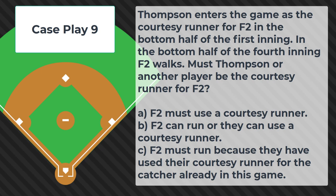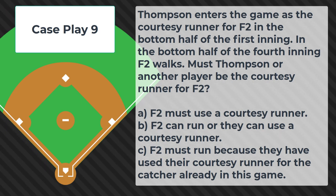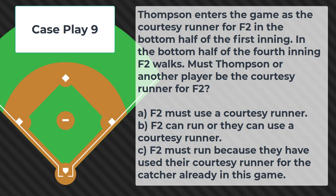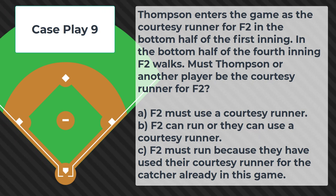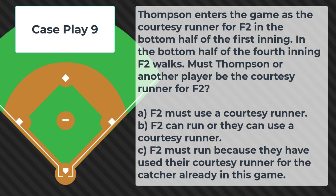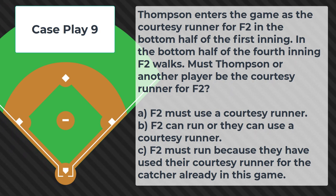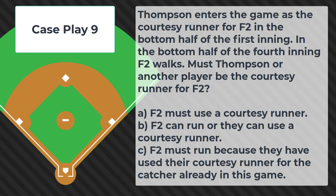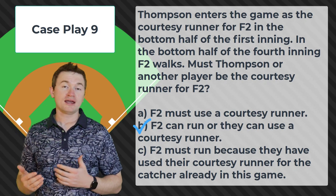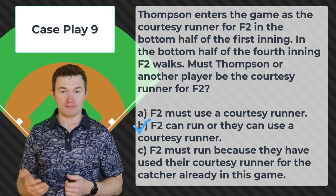Case play number nine: Thompson enters the game as the courtesy runner for F2 in the bottom half of the first inning. In the bottom half of the fourth inning F2 walks. Must Thompson or another player be the courtesy runner for F2? Is the answer: A — F2 must use a courtesy runner, B — F2 can run or they can use a courtesy runner, or C — F2 must run because they have already used their courtesy runner for the catcher? The correct answer is B. The team always has the option as to whether or not they want to use the courtesy runner each time their pitcher or catcher gets on base.